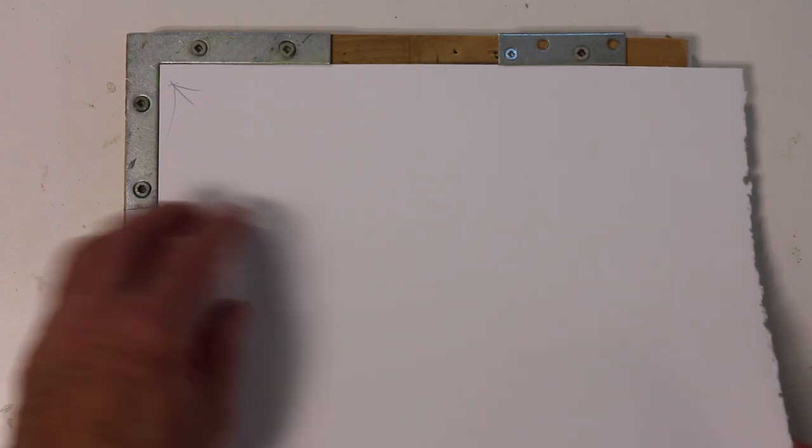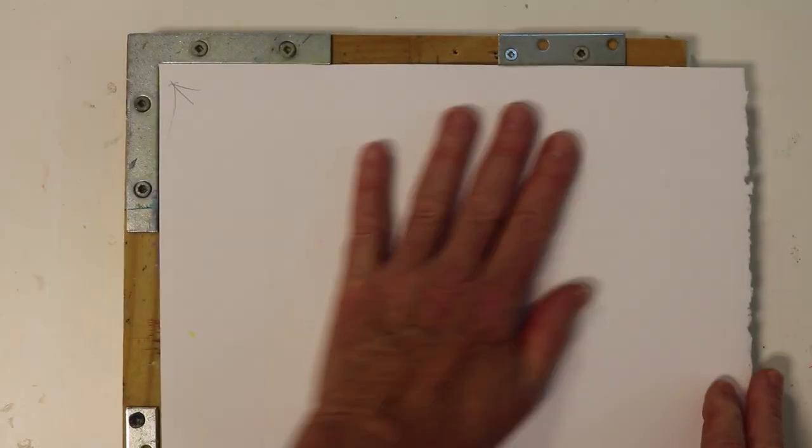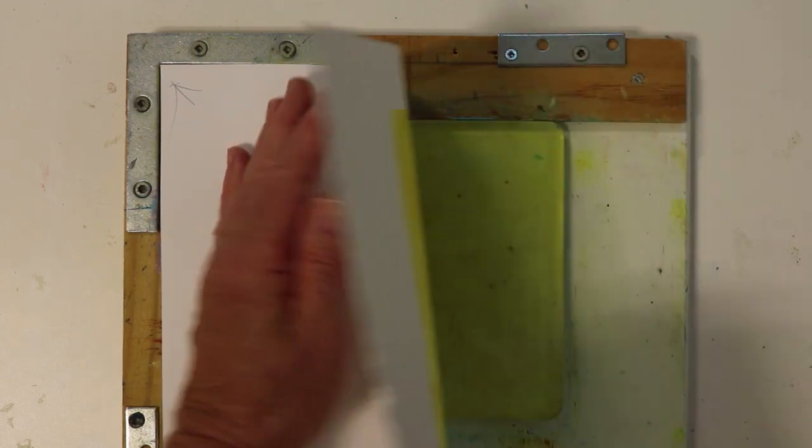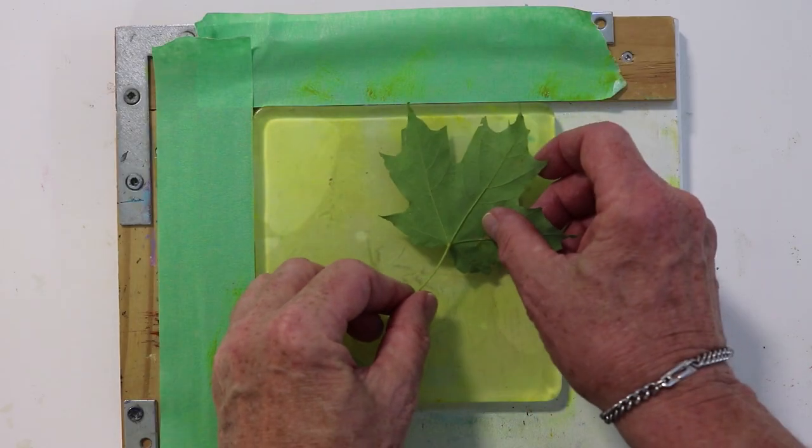I just put the one color on for background, and then I lay my plant material, my first layer of plant material, on top of the jelly plate to act as a stencil.